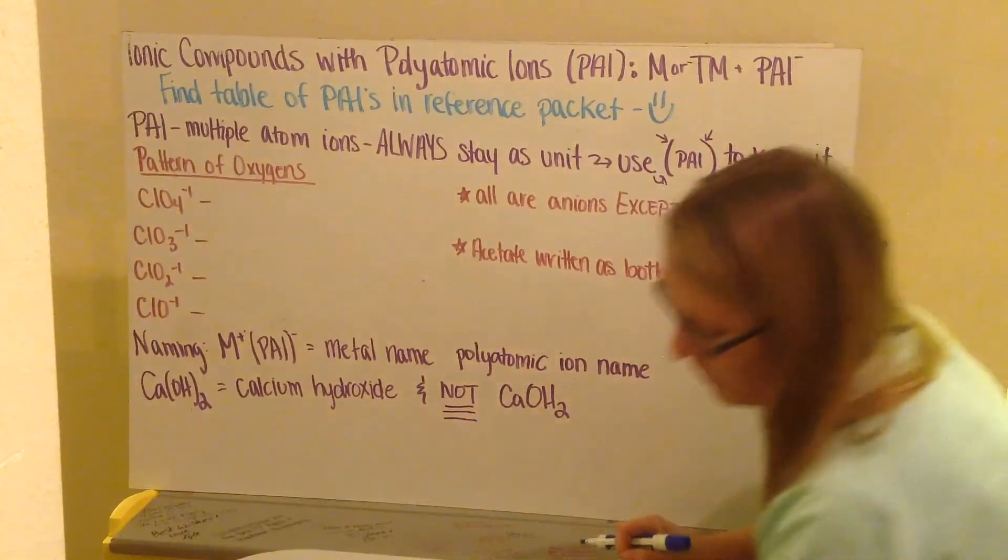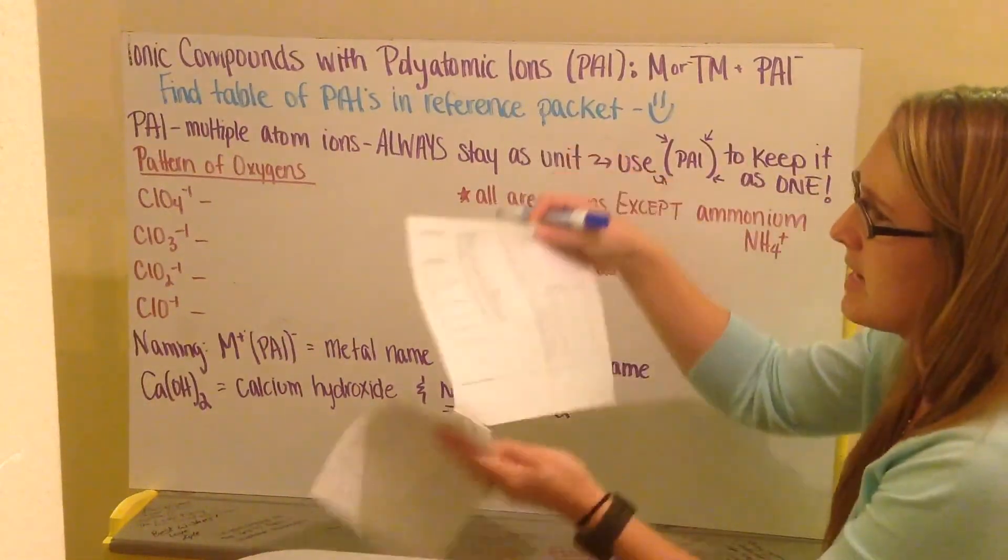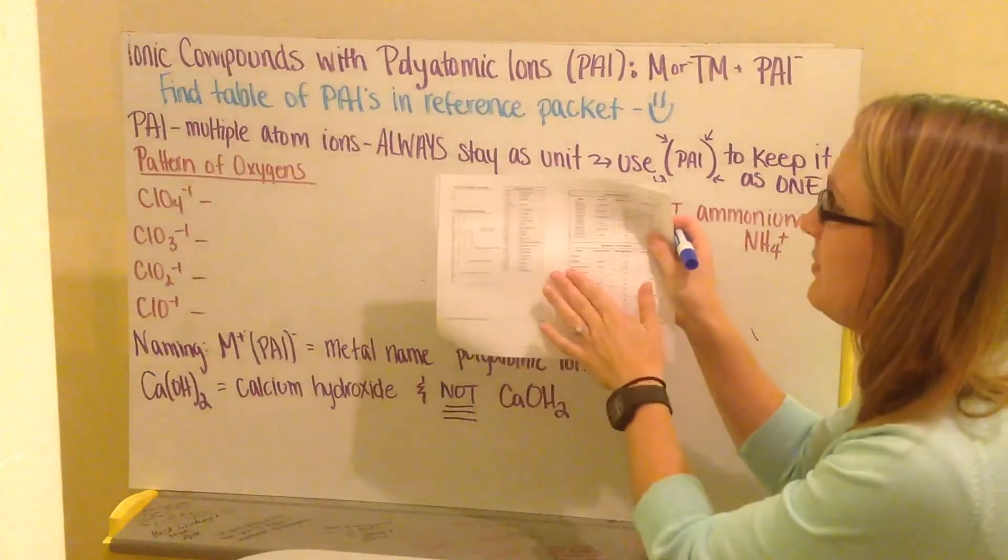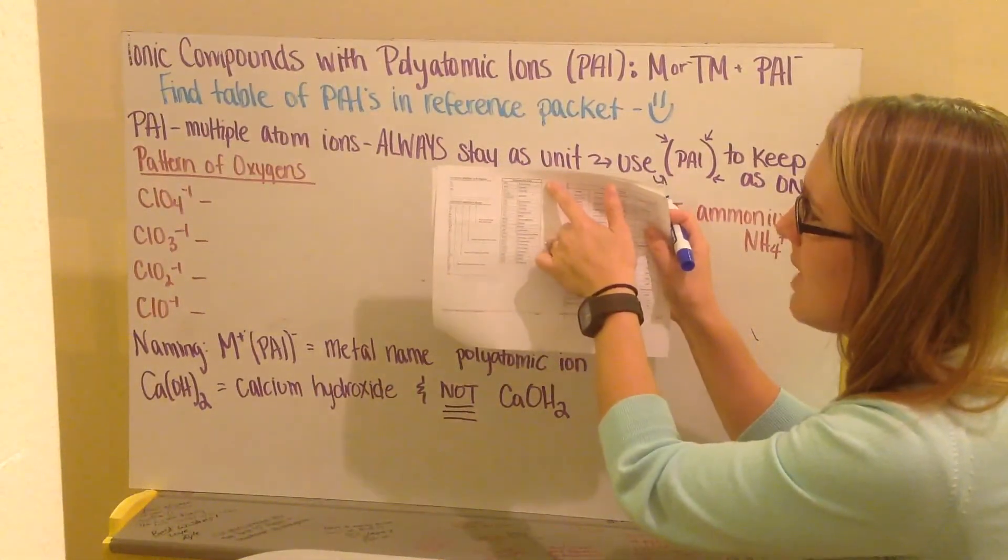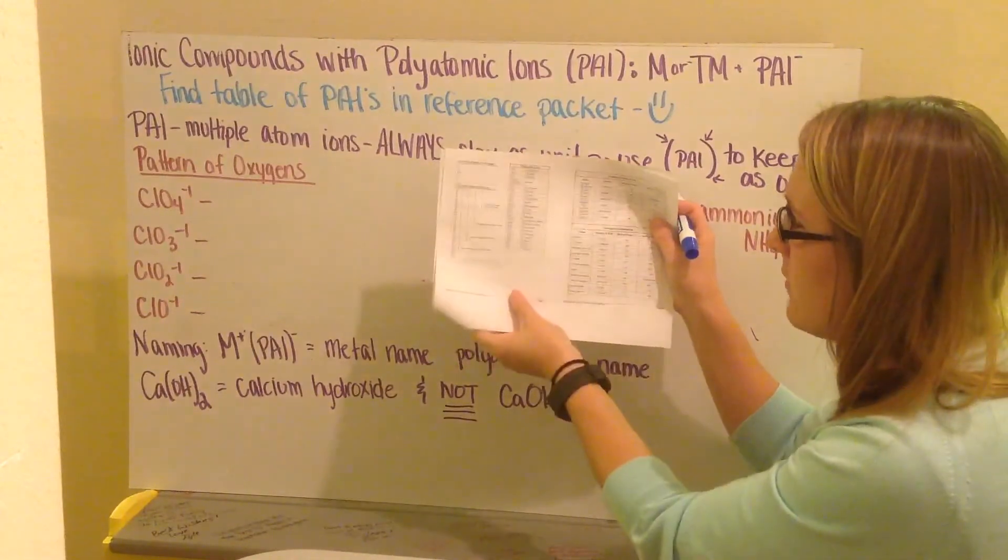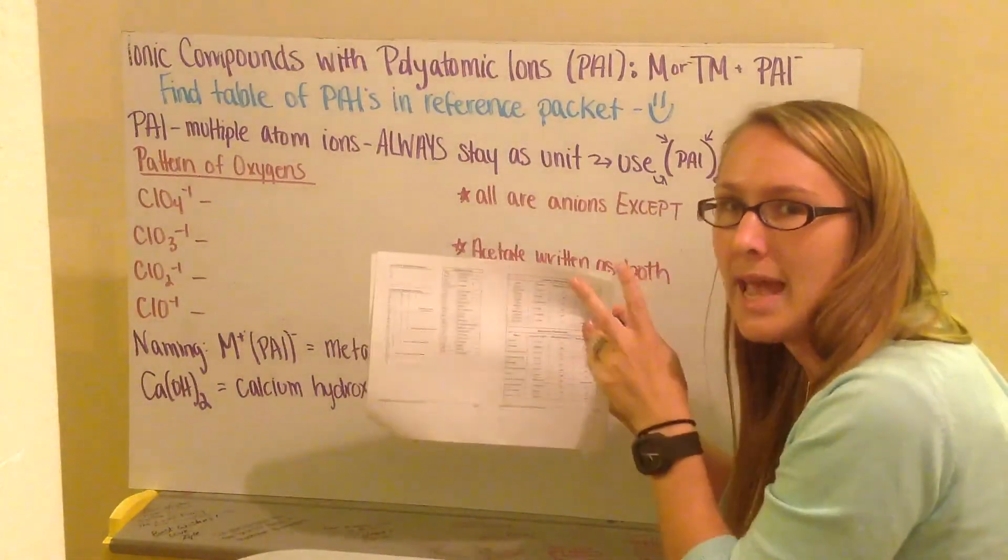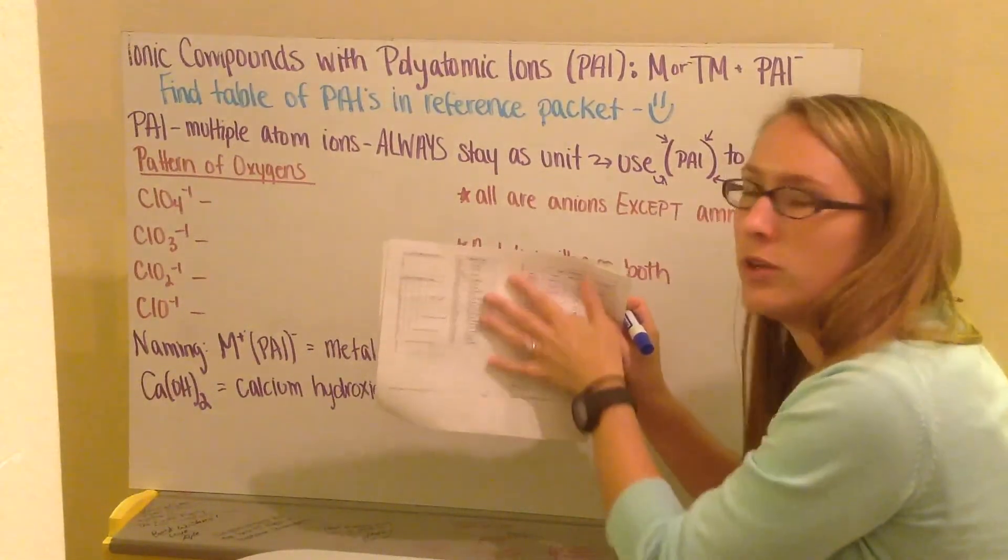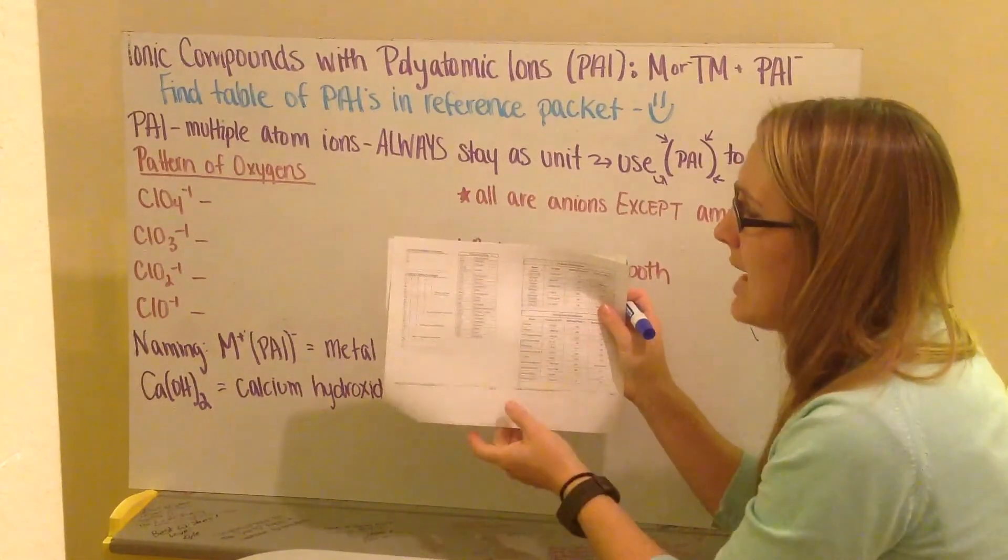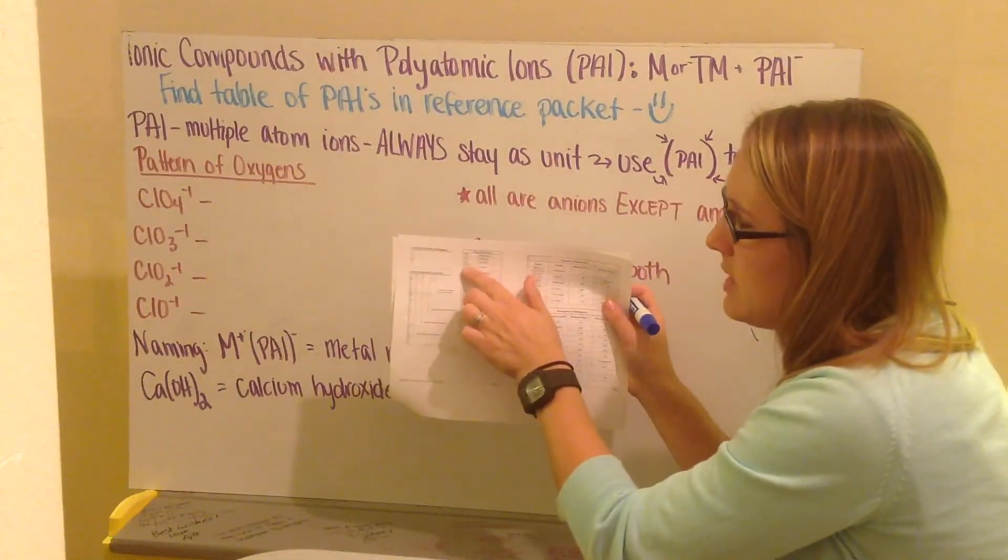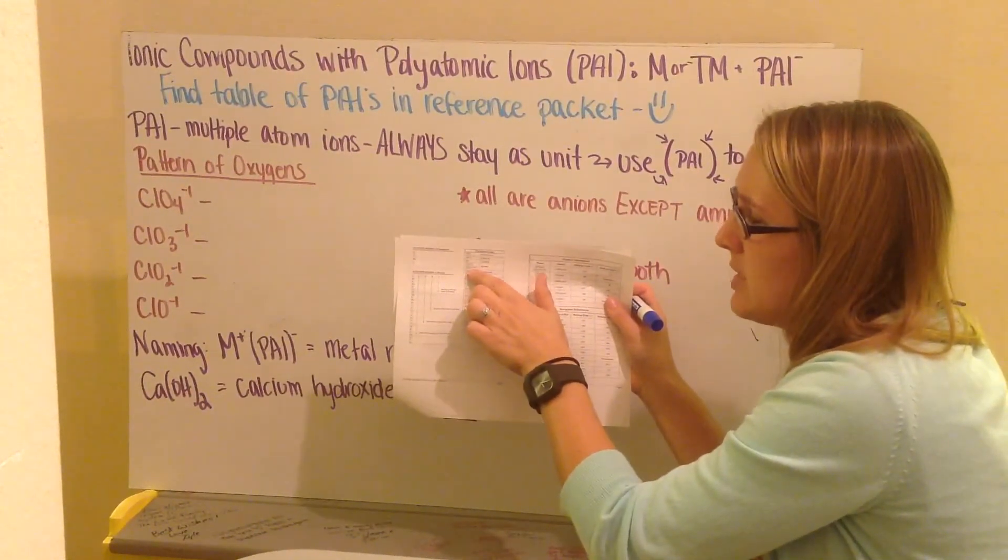On your periodic table reference packet, you'll see that you have a chart of polyatomic ions. Go ahead and locate that now. You should see it looks like this, starting with ammonium at the top down to phosphate at the bottom. Whenever you see that there's more than two atoms in a compound, you'll refer to this chart. Notice at the fourth box down we have acetate, and that acetate can be written as both C2H3O2 with a negative charge, or as CH3COO.